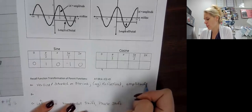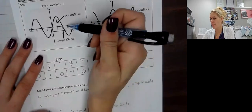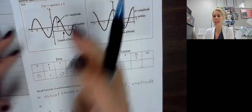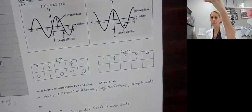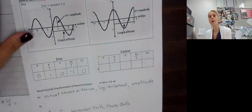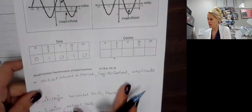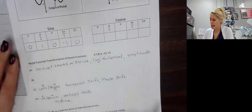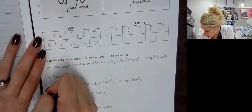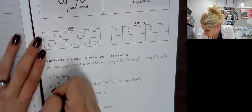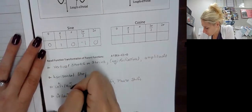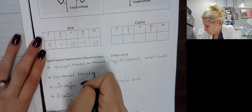Usually our amplitude for a parent function is 1. So that's what they mean by amplitude. Now, B does a horizontal stretch or shrink. What that does is it changes the period.